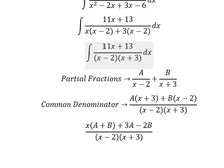Now we compare the coefficients. For the x term, we have 11, so A+B equals 11. For the constant term, 3A minus 2B equals 13.